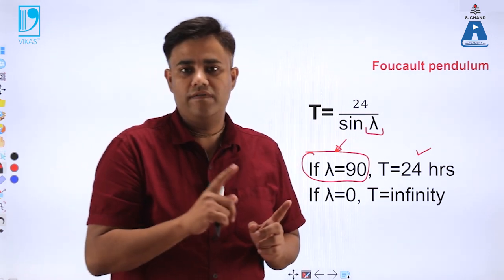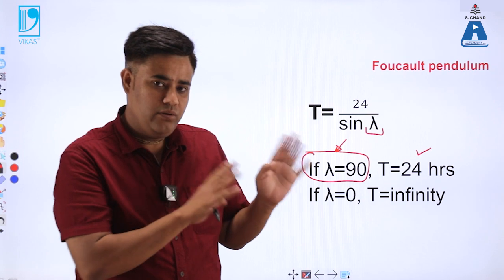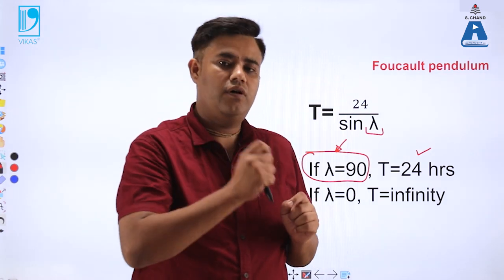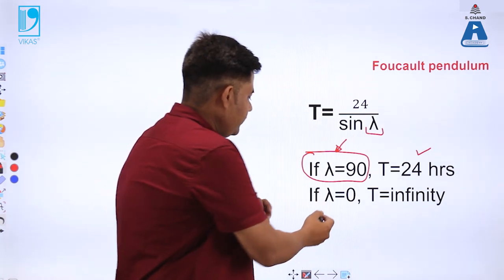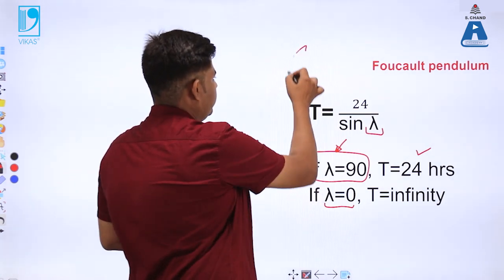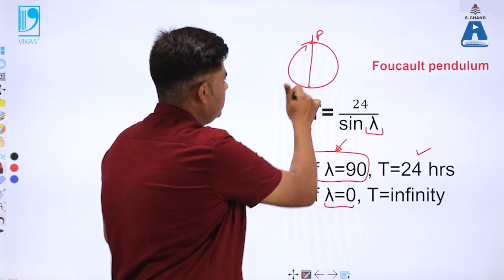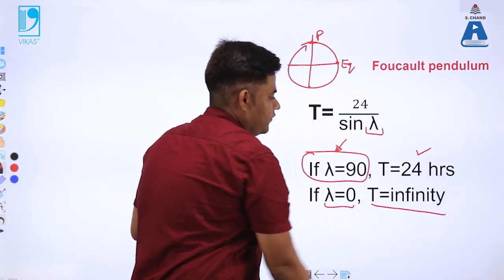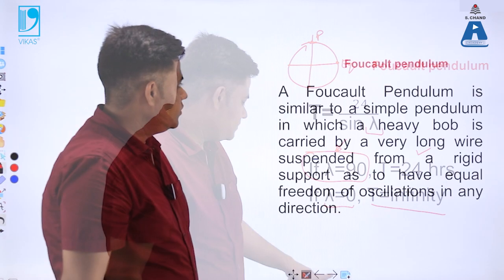So the pendulum's period matches the Earth's rotation period — indicating that if the Earth is revolving about its axis, the pendulum is also revolving about its axis. If lambda is 0, meaning we are at the equator, the time period becomes infinity — it would take infinite time to complete a rotation.